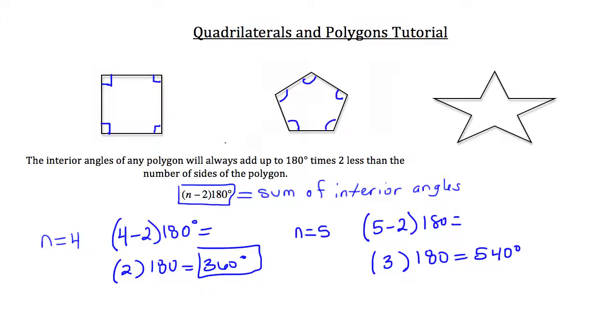Since we know that this is a regular pentagon, if you wanted to solve for the value of any one of those interior angles, we would just divide the total number of degrees that they all add up to by the number of angles that there are, 5. And you'd get that each of those individual angles is 108 degrees.